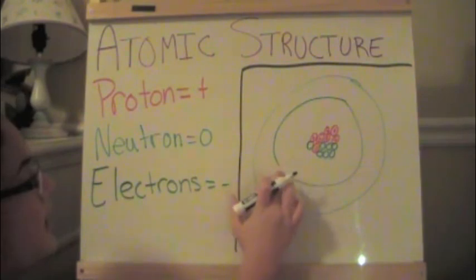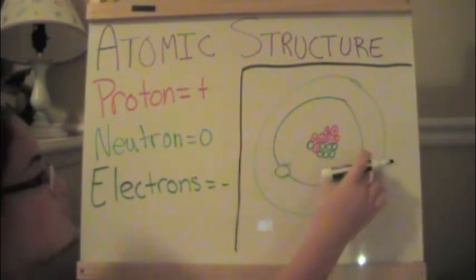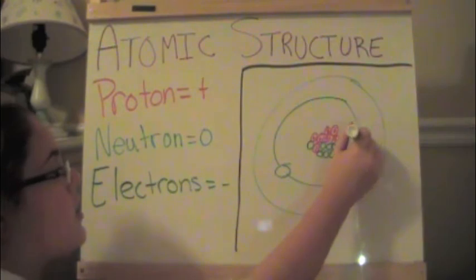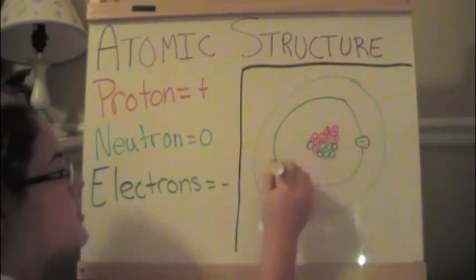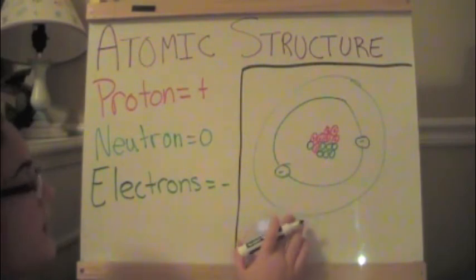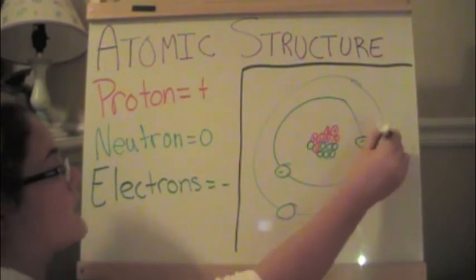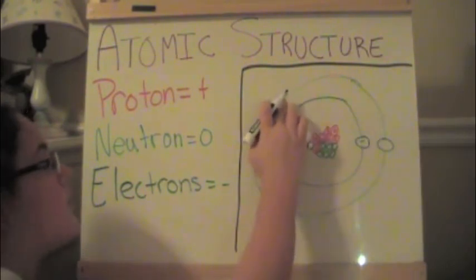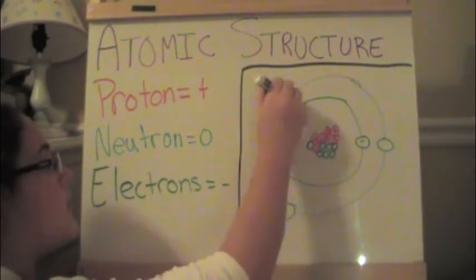And let's say there's two electrons in the first shell, and there is three electrons in the outer shell.